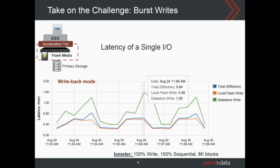Let's look at the write latency. The blue line — what the virtual machine would see — is pretty close to the flash write response time, shown by the orange line. In the background, when data was also sent to the primary storage, response times were much higher. This is what the latency the virtual machine would have seen if it was writing directly to storage. But because it was writing to flash, that higher latency was hidden from the virtual machine. So virtual machine is happy, your data is safe, and data is sent to the primary storage in the background.